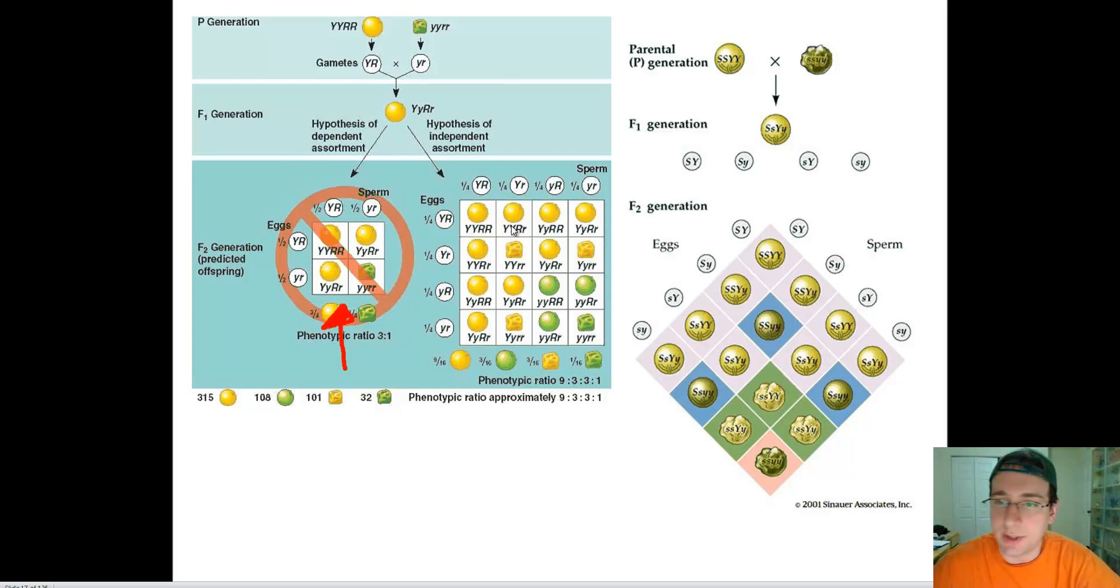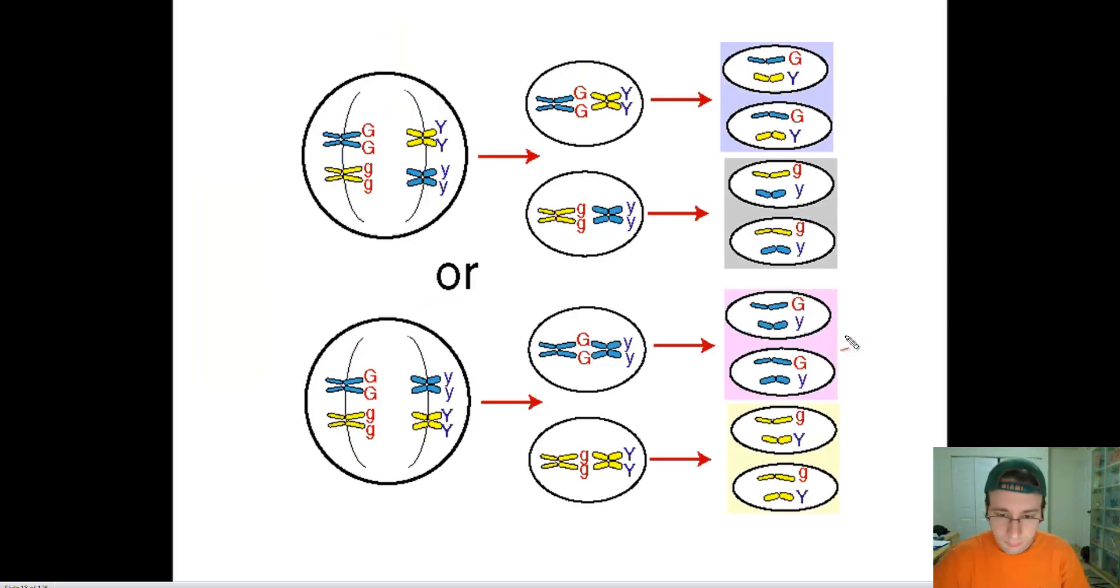Mendel clearly put out that there's independent assortment or equal chance of each one of those arrangements or combinations. There is no grouping of the genome. There is no three to one ratio, no grouping of traits when you look at two traits being carried on together. Instead you get a nine to three to three to one ratio when you look at two hybrids crossing. We talked about meiosis and the separation of the homologs as the source of this independent assortment.